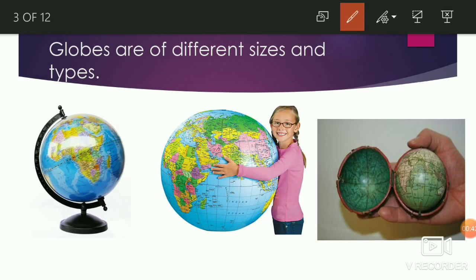Globes are of different sizes and types. There are large, small, inflatable pocket globes like balloons. Some globes can be placed on the table and some can be suspended from the ceiling. While it is cumbersome to carry huge globes, it is easy to carry pocket globes or inflatable globes.